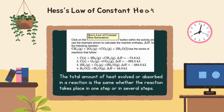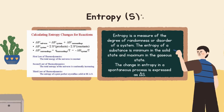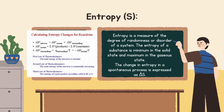Hess's law of constant heat summation: the total amount of heat evolved or absorbed in a reaction is the same whether the reaction takes place in one step or in several steps. Entropy S: entropy is a measure of the degree of randomness or disorder of a system. The entropy of a substance is minimum in the solid state and maximum in the gaseous state. The change in entropy in a spontaneous process is expressed as ΔS.